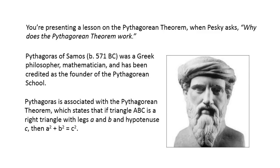Pythagoras is most often associated with the Pythagorean Theorem, which states that if triangle ABC is a right triangle with legs a and b and hypotenuse c, then a² + b² = c².